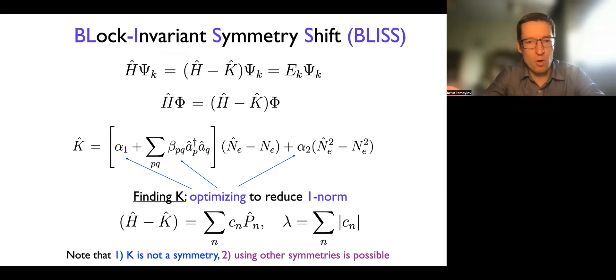Now, some comments here is that K, even though it uses symmetries, it's not symmetry itself. It doesn't need to be. So the only thing we need from K is that the states with the right number of electrons, K doesn't change them. Okay, so K acting on the right symmetry block just produces zeros. And using other symmetries beyond the number of electrons is also possible, but it turned out to be not very efficient. We tried it and didn't quite work very well in this particular case.